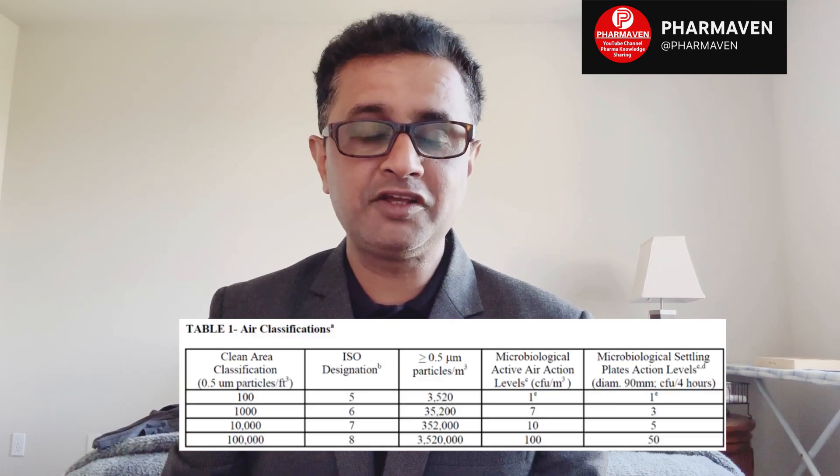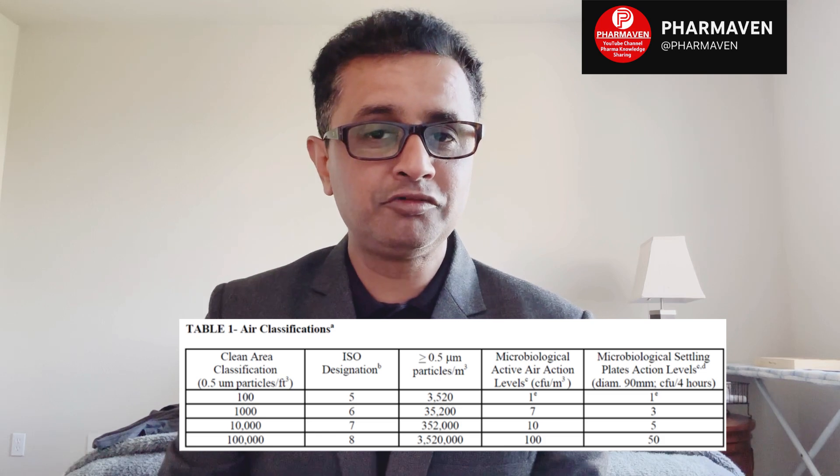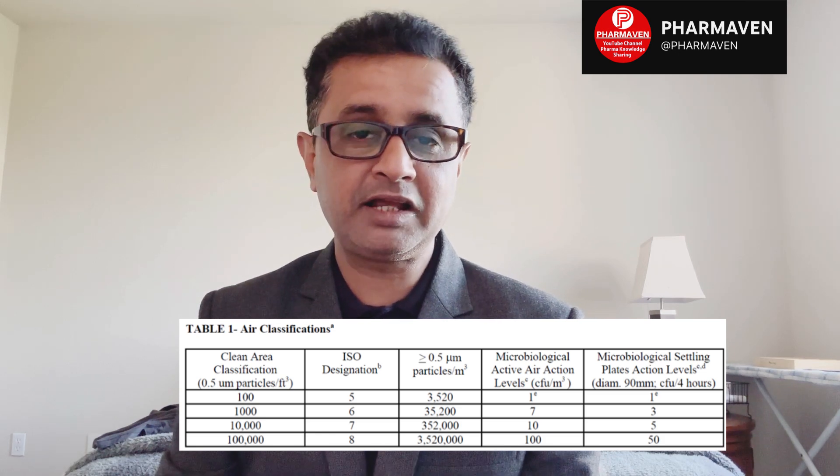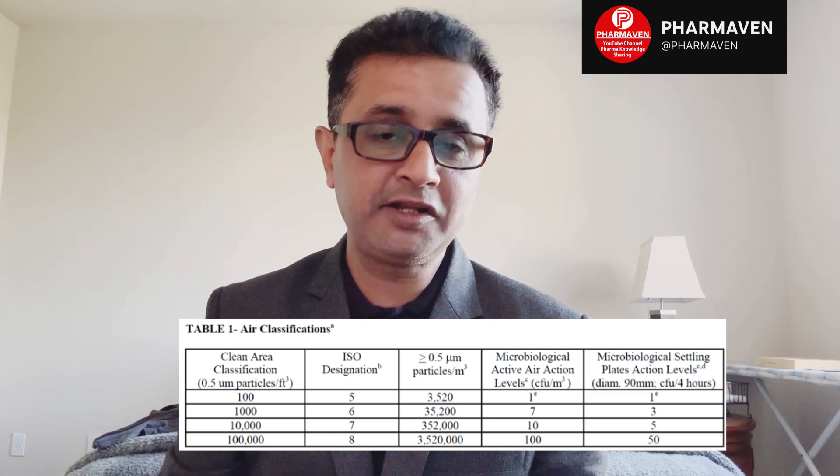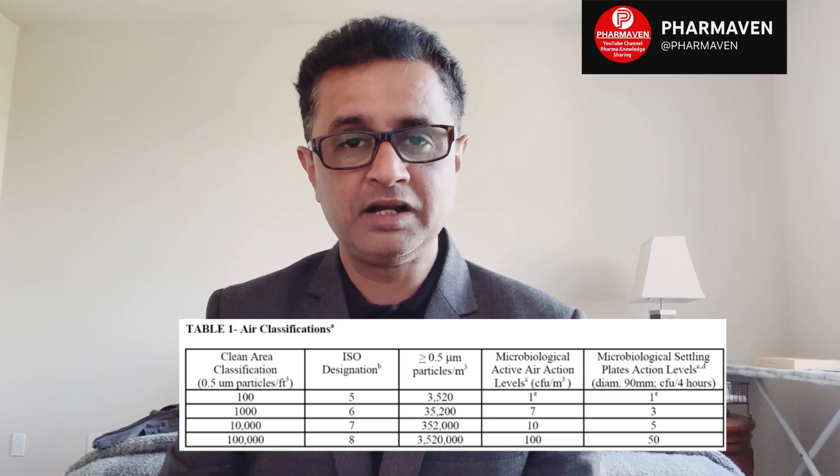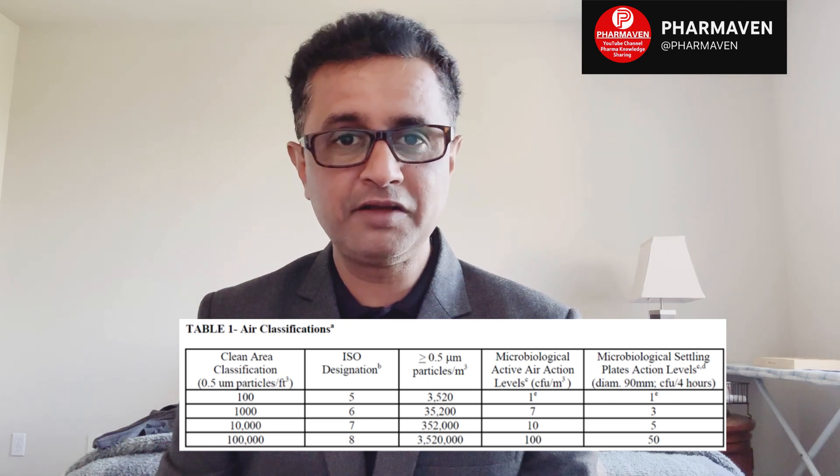The Guidance for Industry uses the reference of ISO 5 and includes both classifications — particle count per cubic feet and particle count per cubic meter — and references the relevant ISO classification. So let's first understand ISO 5, or Class 100.